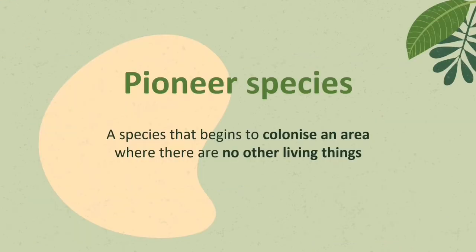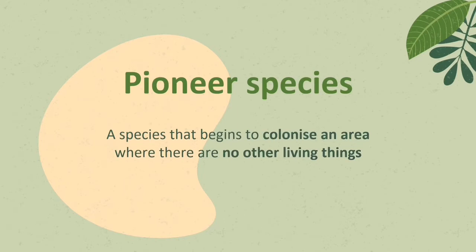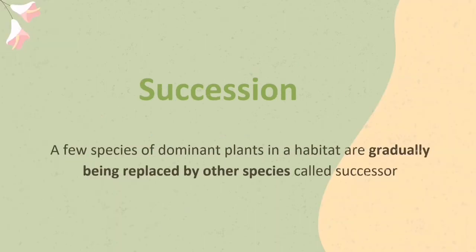Pioneer species: a species that begins to colonize an area where there are no other living things. Colonization: plants start to conquer an uninhabited area, breed, and form colonies in that area. Succession: a few species of dominant plants in a habitat are gradually being replaced by other species, called successors.